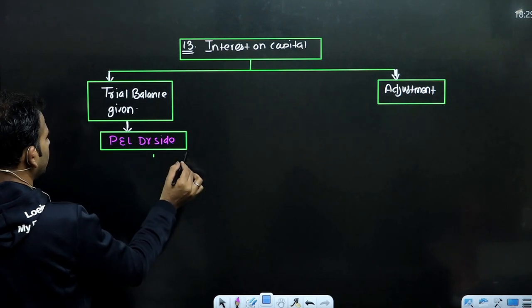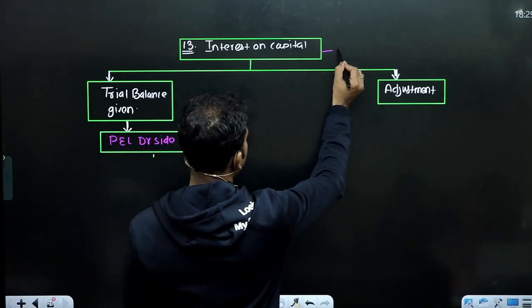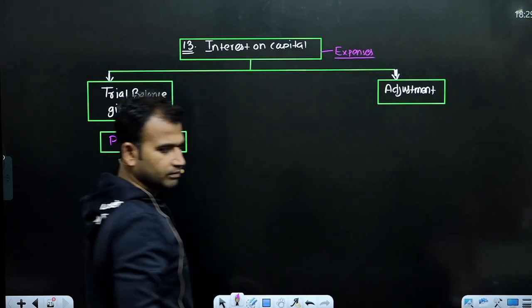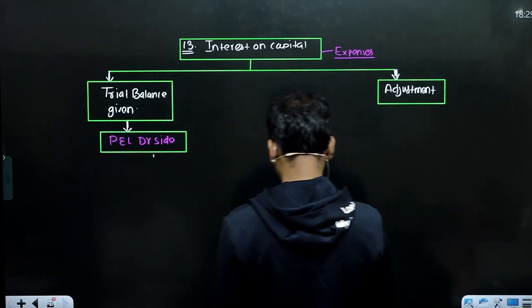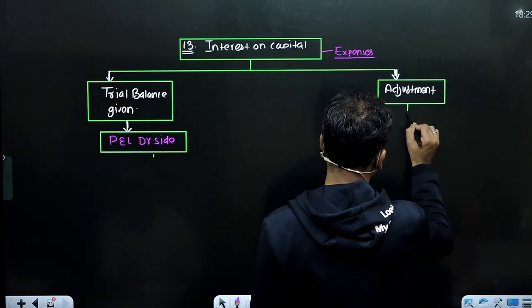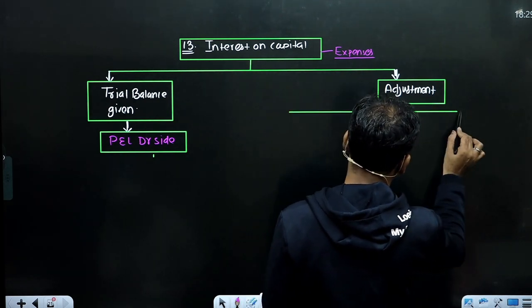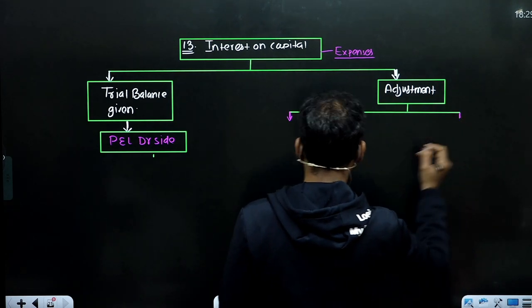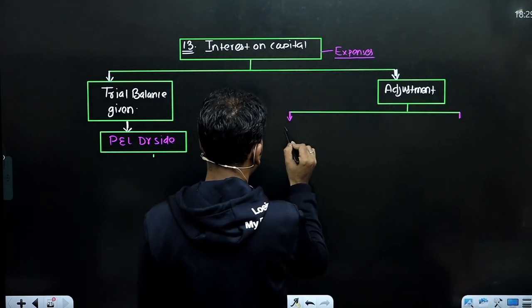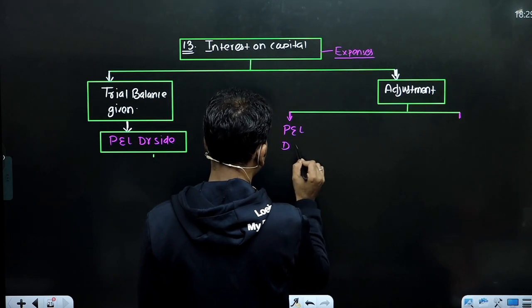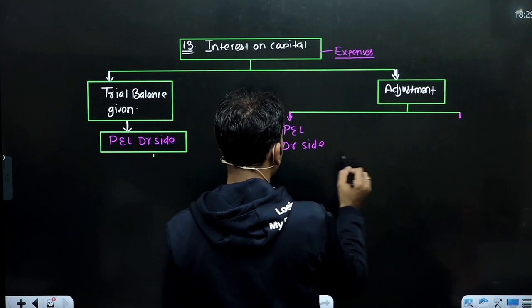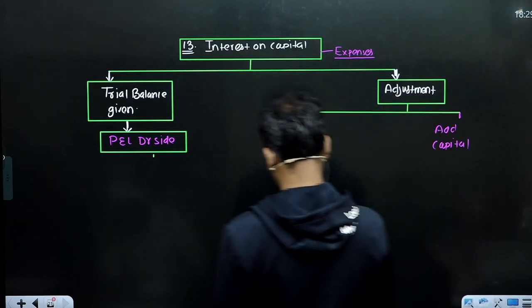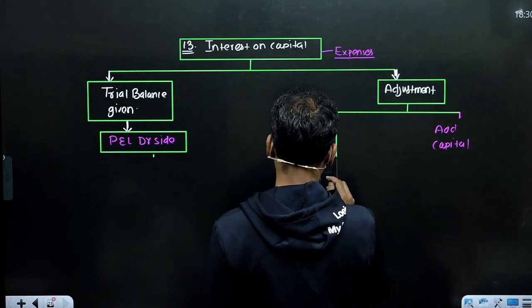याद रखिएगा, interest on capital जो होता है वो business के लिए एक expense होता है, हमें देना होता है। अगर adjustment में given हो तो दो entry होंगी - एक चला जाएगा profit and loss के debit side, और दूसरा add हो जाएगा capital में।